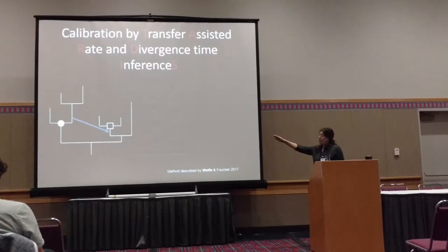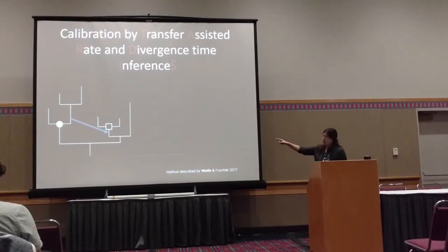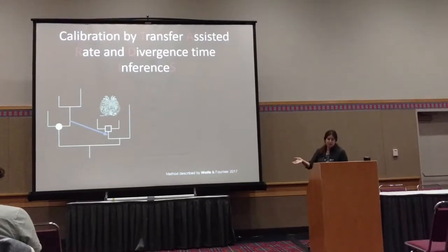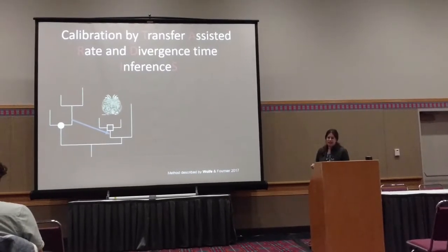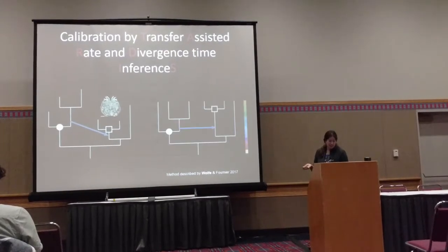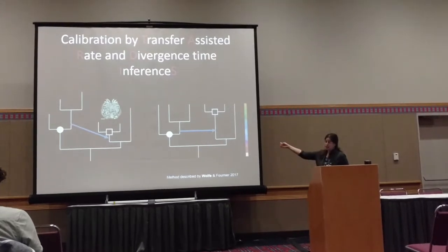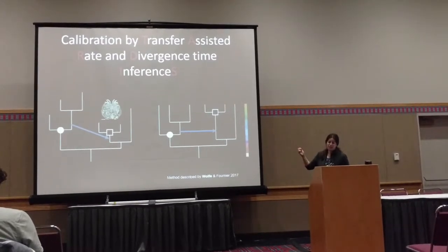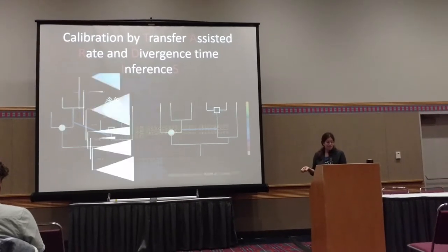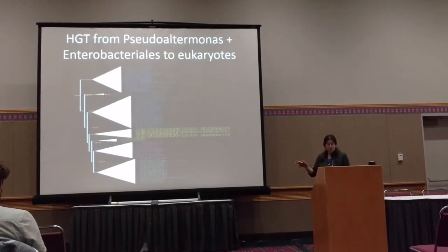When you have a transfer from a donor clade — indicated by the circle — into a recipient clade, and that recipient clade is a eukaryotic clade that contains fossils, that allows us to put this onto an absolute timescale, because you know that the donor clade must be older than the recipient, and the recipient has a fossil age. So that allows you to put a prior for Bayesian phylogeny, and we identified within the proteobacteria a couple of these situations.